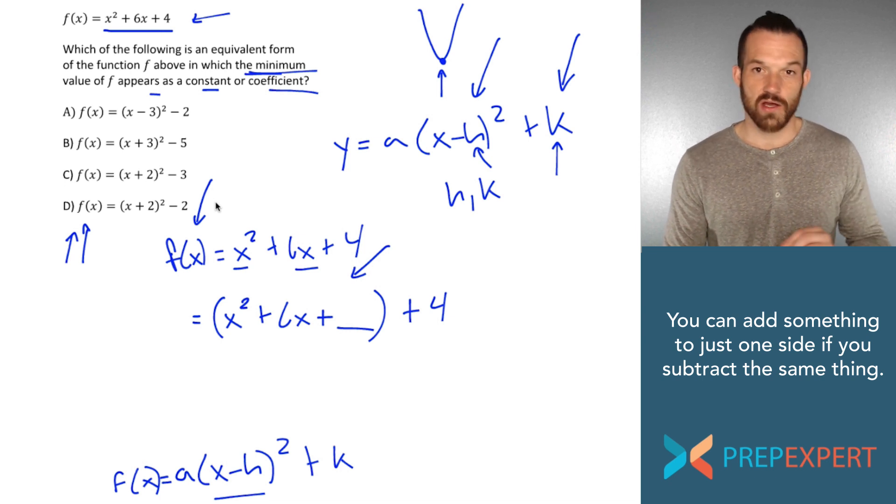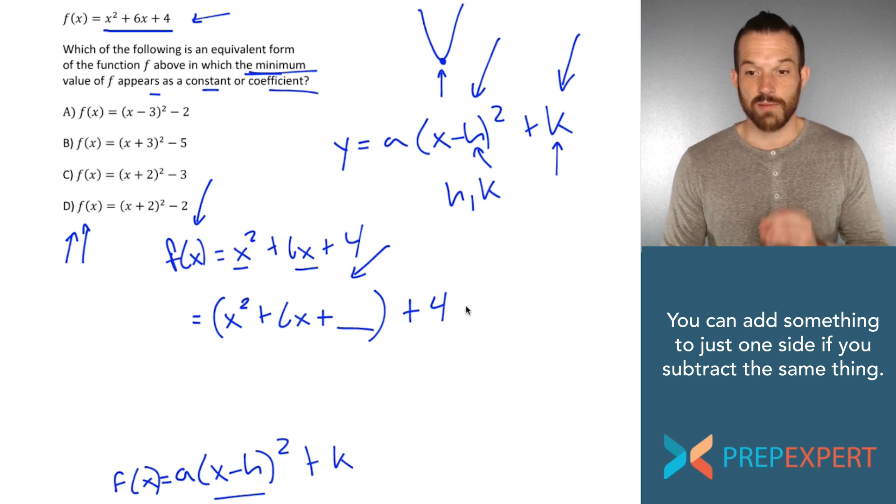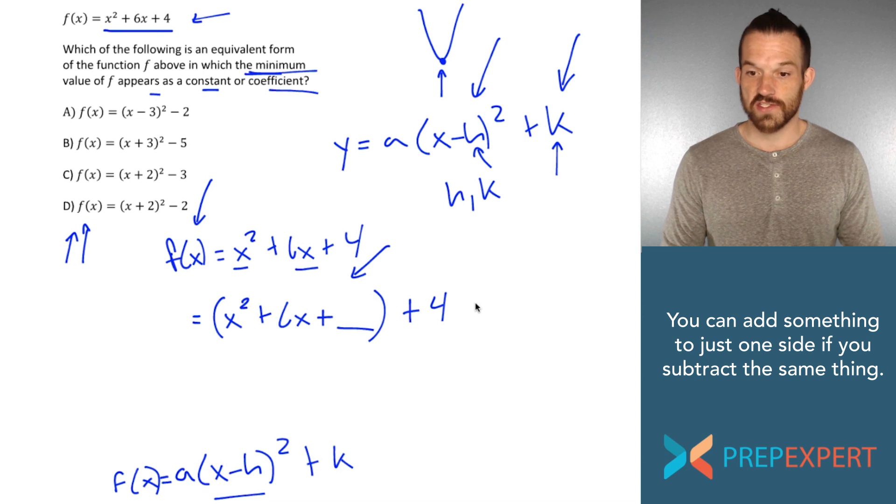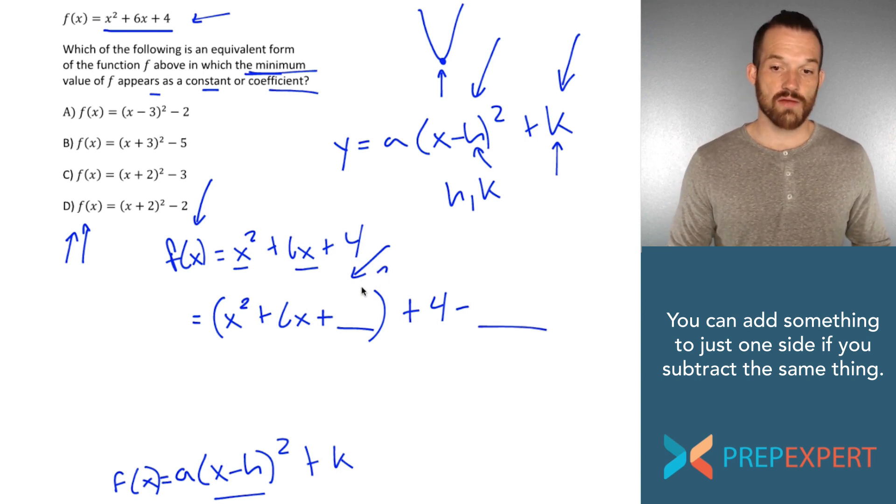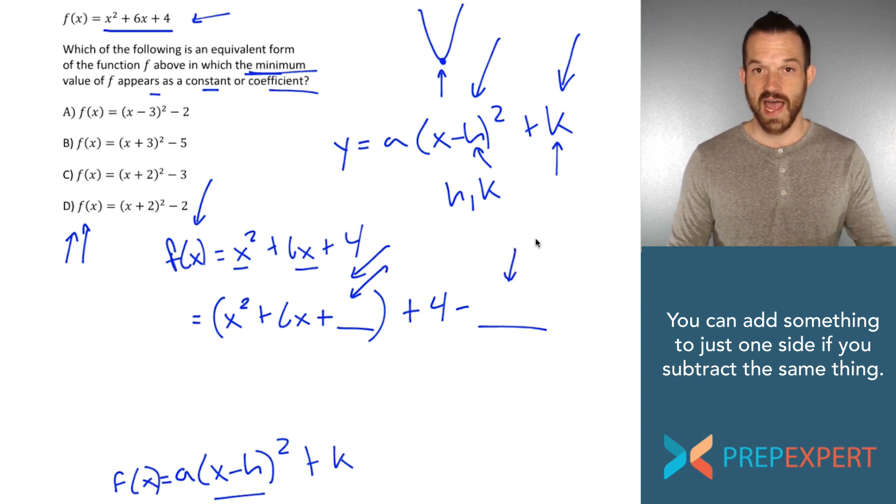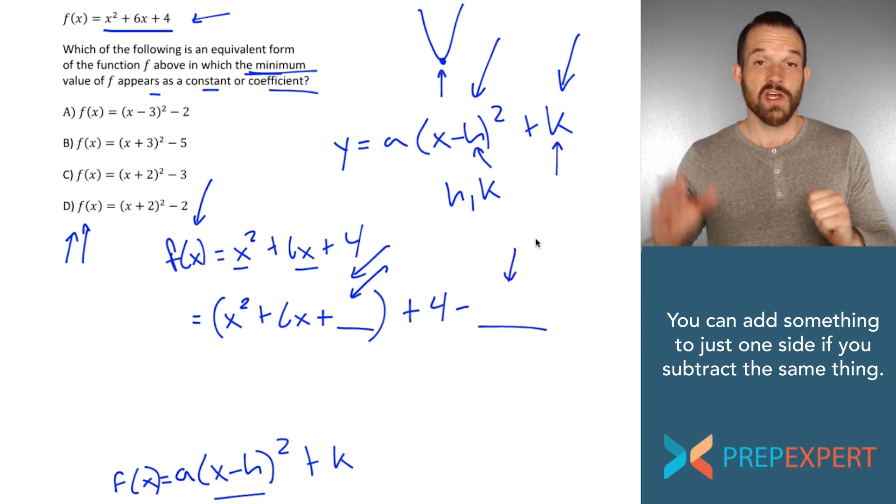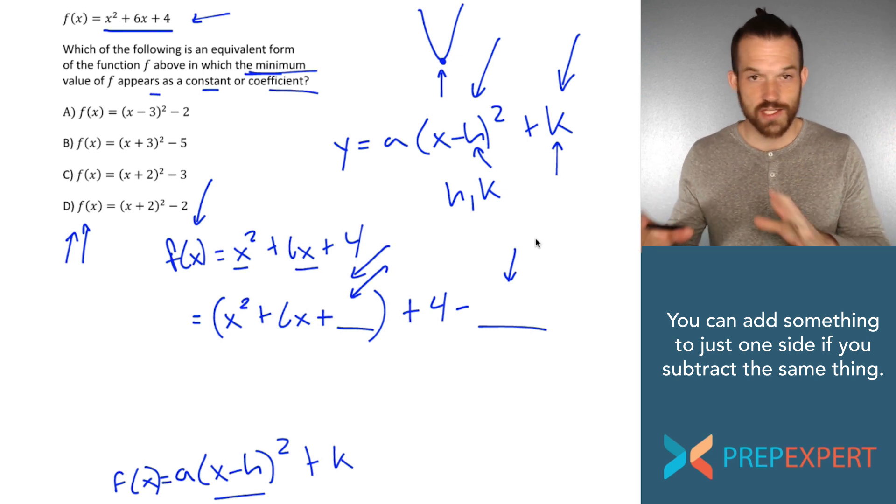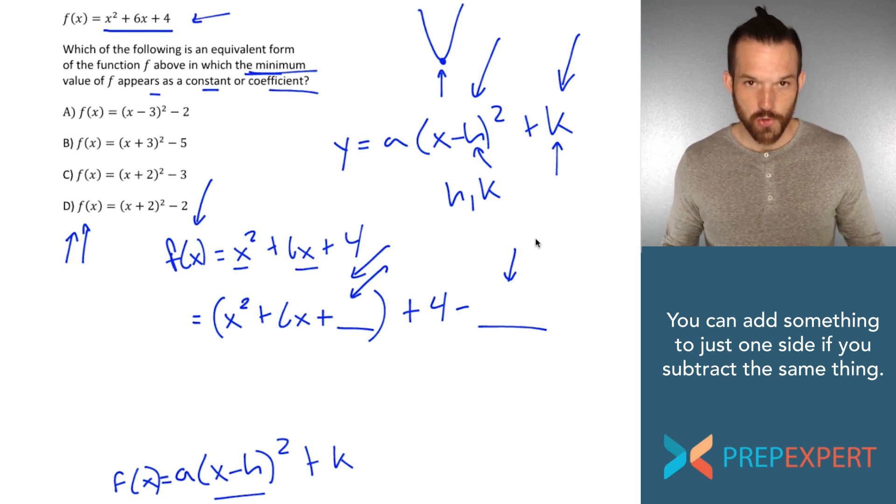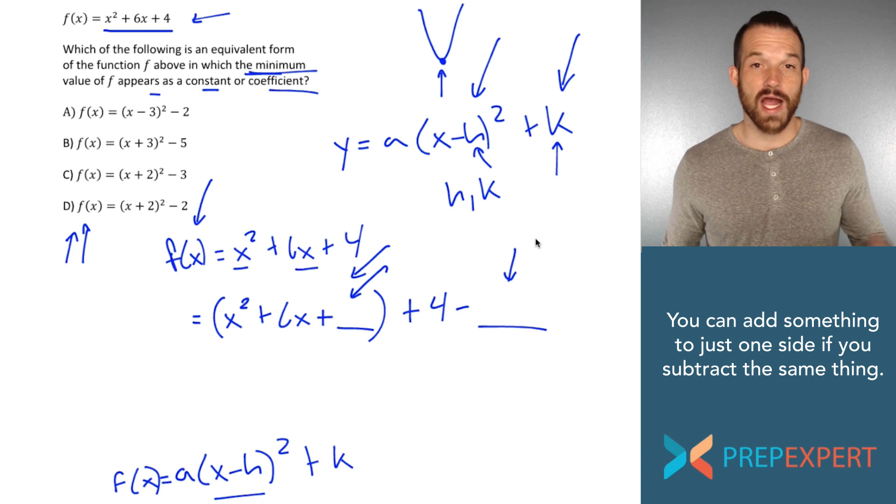The answer is I'm going to subtract the same value also on the right. So again, whatever ends up going in this blank is also going to go in this blank. And that way, I have added that value, yes, but I've also subtracted it. So the net change is zero. And that's totally allowable. Now, I just got to figure out what goes in the blank.